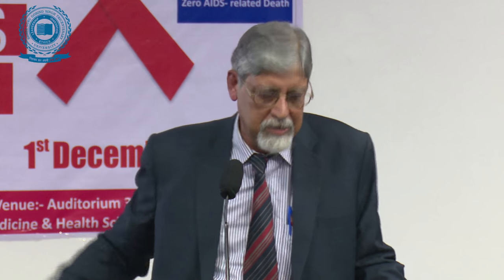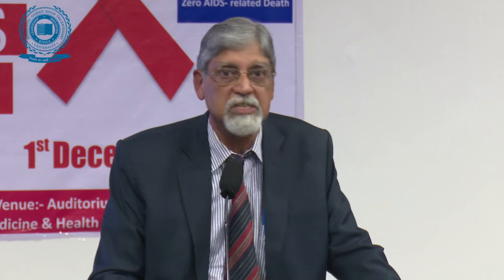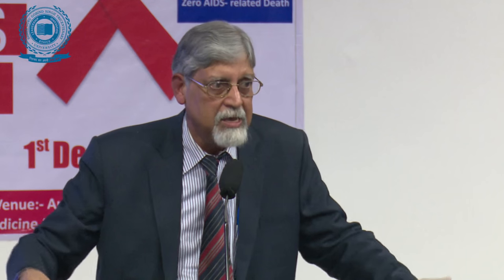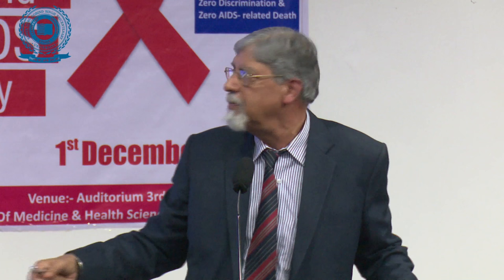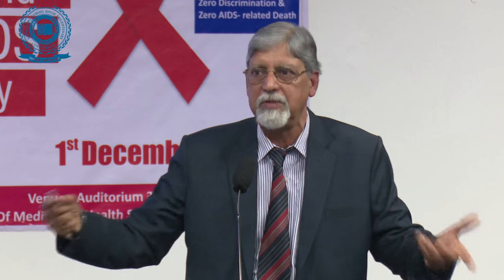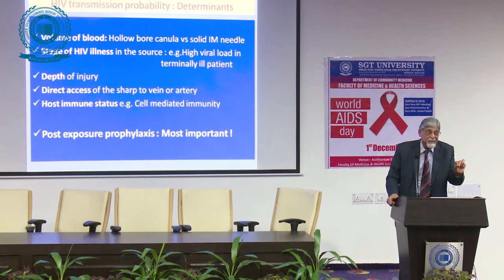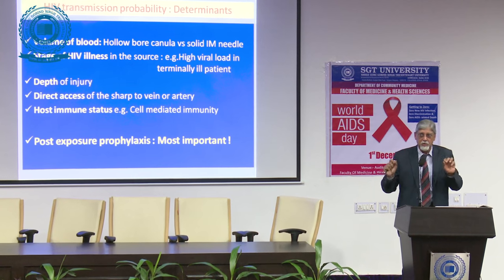This underscores the importance of post-exposure prophylaxis. The determinants of HIV transmission probability include: volume of blood, stage of HIV illness in the source (a terminally ill source has higher viral load), depth of injury, direct access of the sharp to a vein or artery, host immune status, and whether the exposed person took post-exposure prophylaxis promptly.